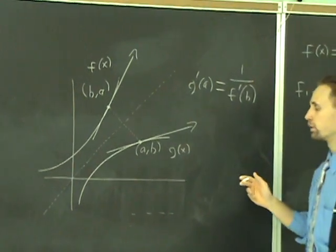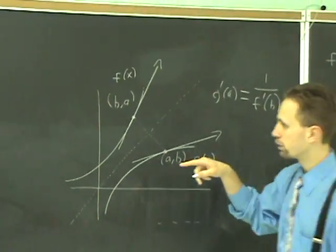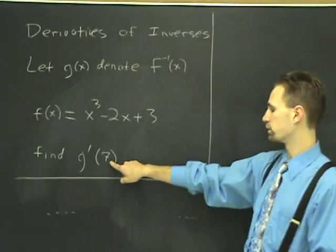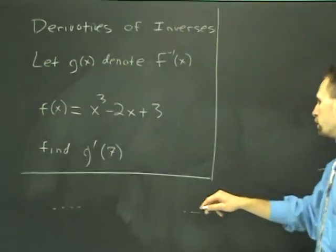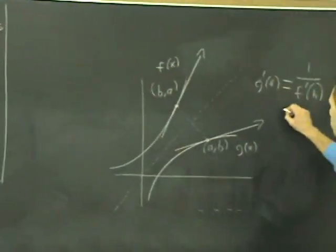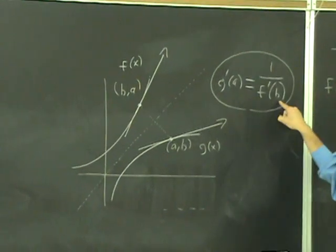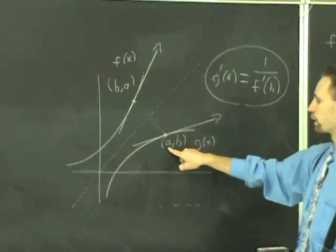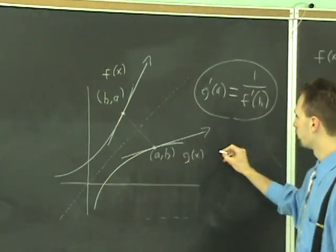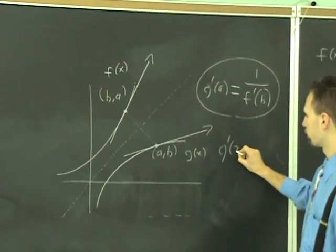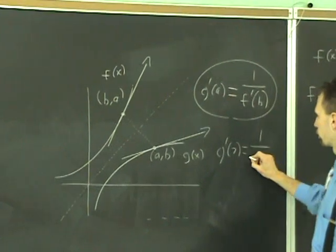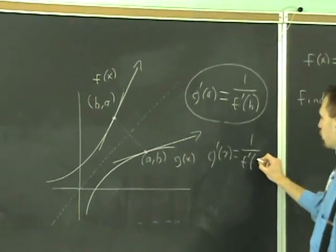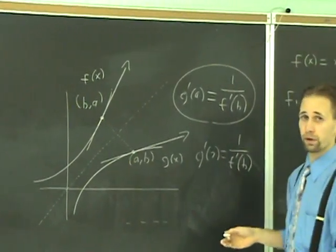And so, to figure out what g prime of 7 is, see, this is an x value, we can do it if we know what this value of B is. See, 7 is like our A here. Alright, so we need g prime of 7 equals 1 over f prime of some number B. Well, how do you figure out what B is?